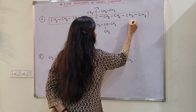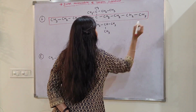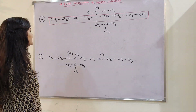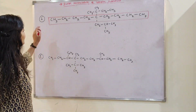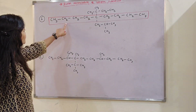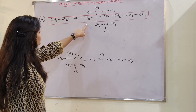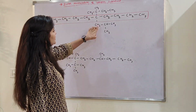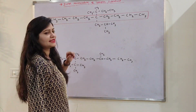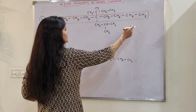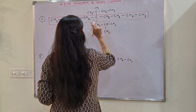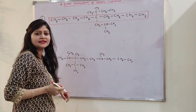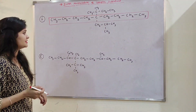In the next step, we will check that our substituent is close. Let's count: 1, 2, 3, 4, 5. In the fifth position, we are getting 2 complex substituents. Here we see: 1, 2, 3, 4, 5. Here we are getting complex substituents.